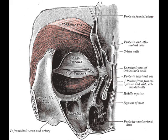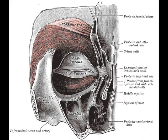The lacrimal part of the orbicularis oculi draws the eyelids and the ends of the lacrimal canals medialward and compresses them against the surface of the globe of the eye, thus placing them in the most favorable situation for receiving the tears. It also compresses the lacrimal sac. This part comprises two pieces: Horner's muscle and the muscle of Riolan. The latter helps hold the eyelids together to keep the lacrimal passage waterproof.